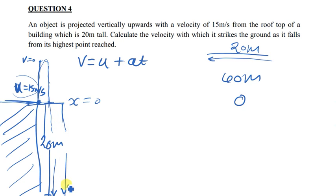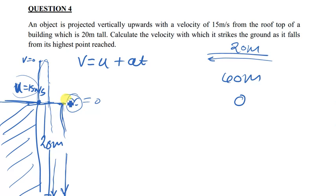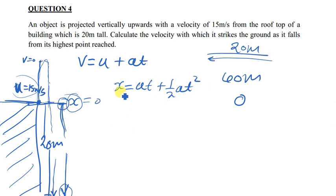To find the time taken for this object to travel from the rooftop down to the ground, we use x = ut + ½at². We put the displacement as 20 meters — just calculating the time for it to move from the rooftop to the ground. So: 20 = -15t + ½(10)t², because the initial velocity is negative 15 (taking upward as positive).